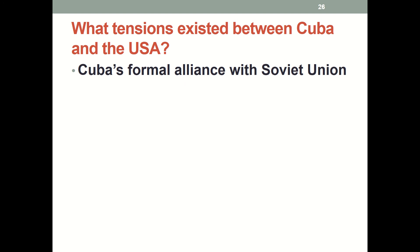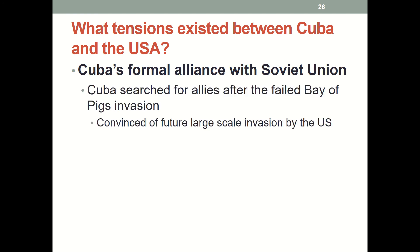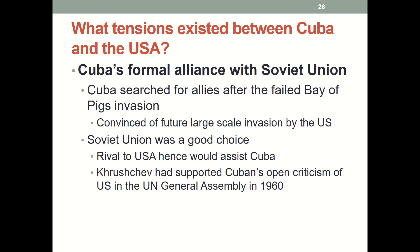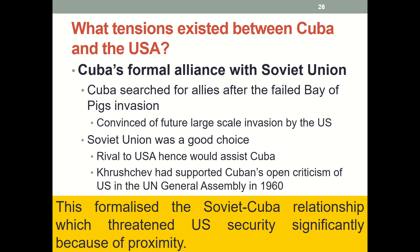These failures sent a very clear signal to Cuba that the USA would continuously try to overthrow Castro, which is why Cuba ended up signing a formal alliance with the Soviet Union. The Soviet Union was a logical choice because the USSR was a rival to the USA and would definitely assist Cuba. This was further cemented by Khrushchev's support of Cuba's open criticism of the United States in the UN General Assembly in 1960, formalizing the Soviet-Cuba relationship and significantly threatening US security due to Cuba's proximity.